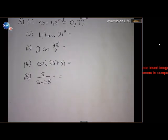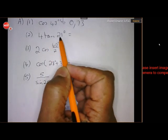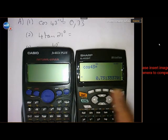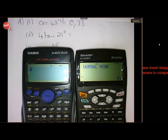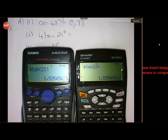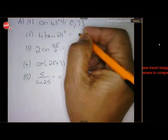For 4·sin(21): type 4·sin(21) on both calculators, closing the bracket on the Casio. Take note — we don't say multiply; just type it in directly. In both cases the answer is 1.535, which rounds to 1.54.